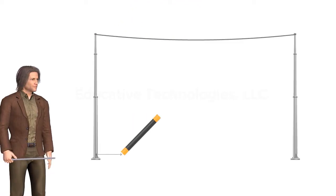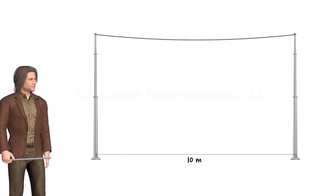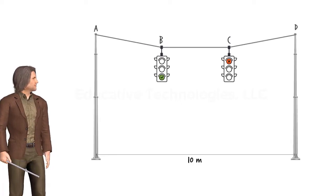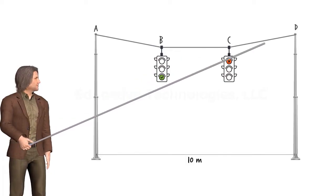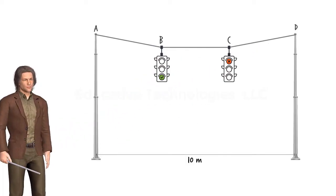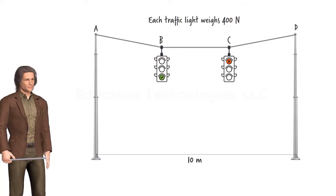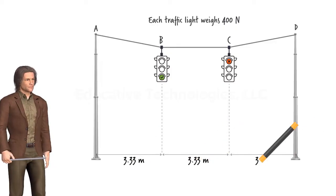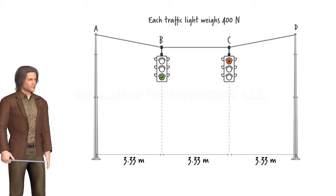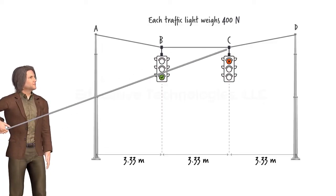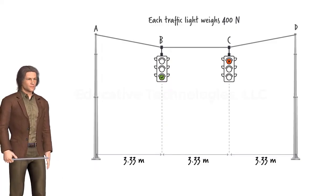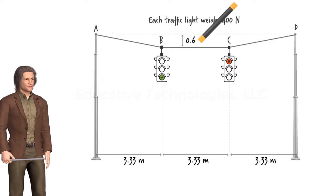Consider a weightless cable spanning a distance of 10 meters between two poles. Attached to the cable are two traffic lights, which cause the cable to settle forming three straight segments. We refer to them as segments AB, BC, and CD. Each light is 400 newtons in weight, and the two lights divide the span of the road into three equal distances. Due to the symmetrical placement, points B and C are displaced downward the same amount — the vertical distance from the top of each pole to points B and C is 0.6 of a meter.